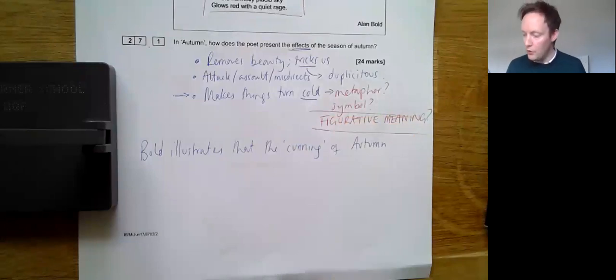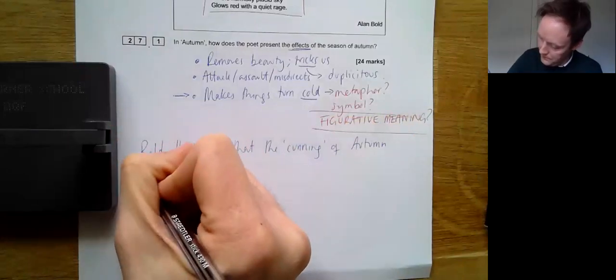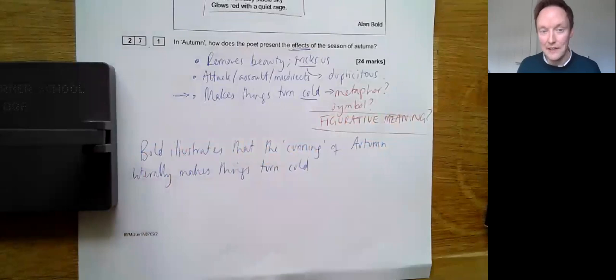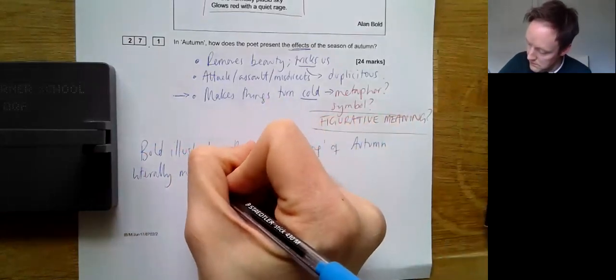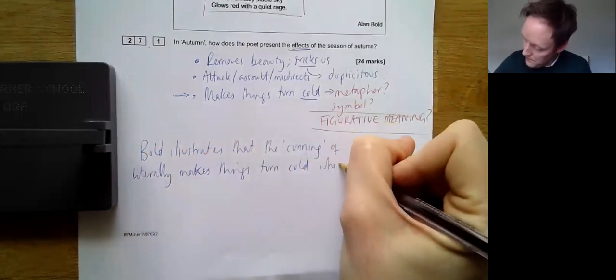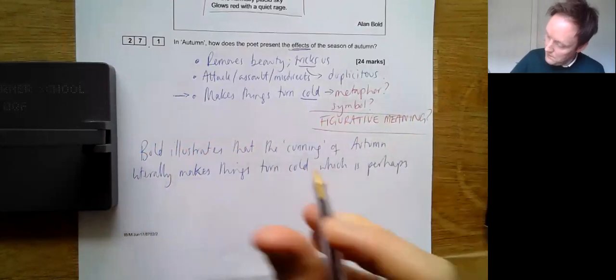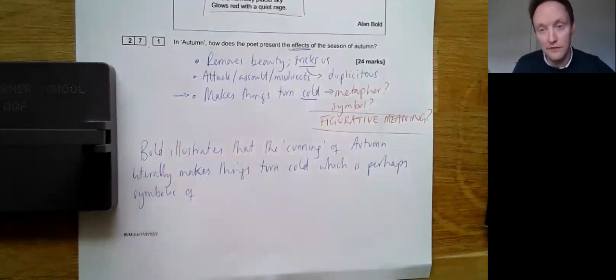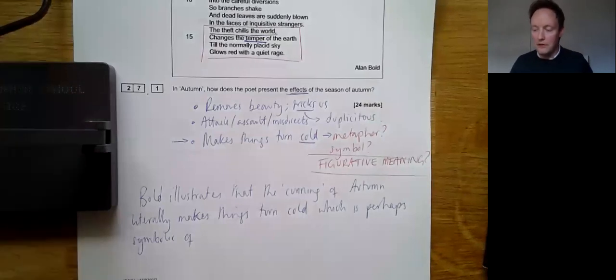So I'm going to focus on this final bullet point here. Bold illustrates that the cunning of autumn literally makes things turn cold, which is perhaps symbolic, which is perhaps a metaphor for, which is perhaps figuratively articulating. It doesn't matter really which one of those you do. It's all metaphor, really. But what does it illustrate? Well, let's put it this way. If it literally turns cold, what does it mean if a person is a cold person? What does it mean if the world is cold beyond the temperature itself? What does it mean if the sky is now glowing red with anger?